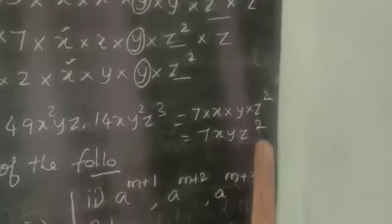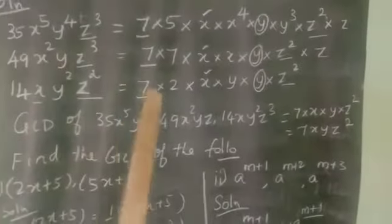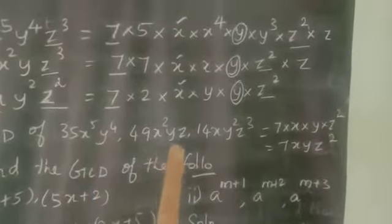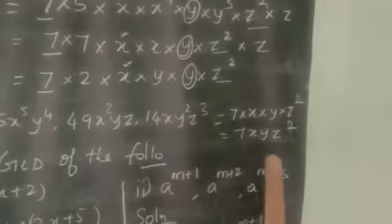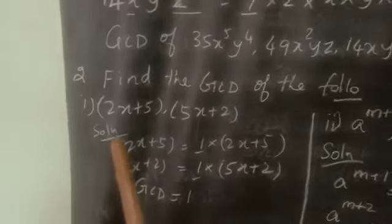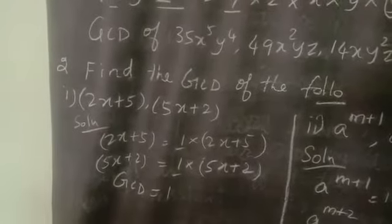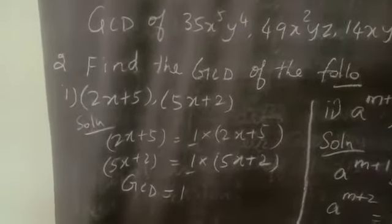So 7xyz², the GCD of the given terms is 7xyz². Now we see the second problem: find the GCD of the following. First sub-question: (2x + 5), (2x + 5), and (5x + 2).